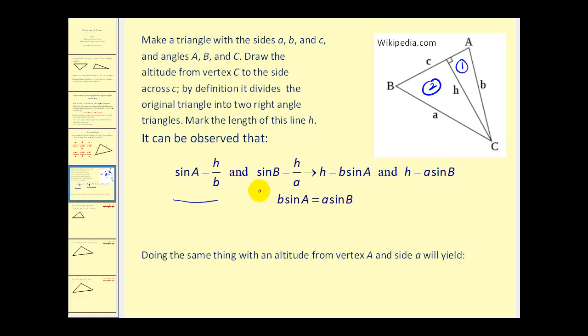So if we have these two equations and we solve them for H, we would have H equals B sine A and H equals A sine B. Since they're both equal to H, we could state that B sine A is equal to A sine B. And now if we divide both sides of this equation by AB, notice on the left, the B's simplify out. And notice on the right, the A's simplify out.